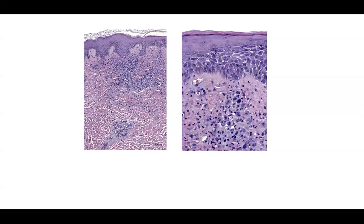There can be clonality in lymphomatoid papulosis, so it is considered a lymphoproliferative disorder. These cells are usually CD30 positive, and in real life these are typically signed out as CD30-positive lymphoproliferative disorder.